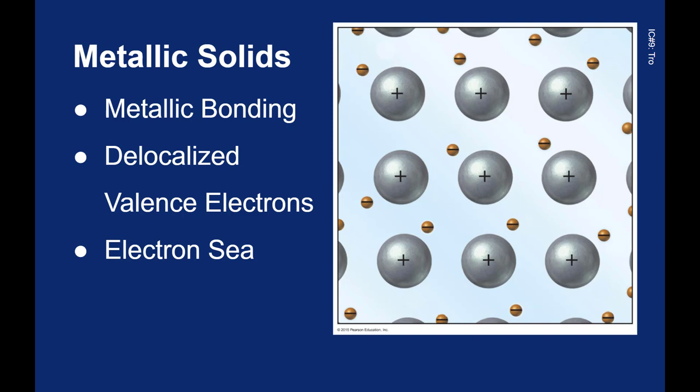And this leads to all the properties of metals that we know. This is why metals are malleable. This is why metals are ductile. The electron sea also reflects light very well. This is why metals are lustrous. These free moving electrons easily conduct electricity but can also conduct heat. And this is why metals are good conductors. It's all based on this metallic bonding.